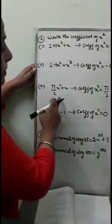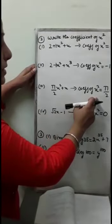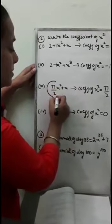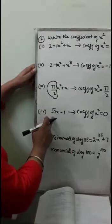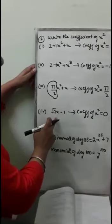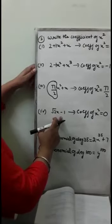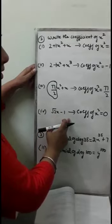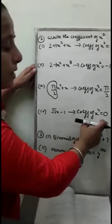In the third part, the expression is pi by 2 times x squared plus x. The coefficient of x squared is pi by 2. In the fourth part, there is no term containing x squared. If there is no x squared term, the coefficient of x squared is 0.